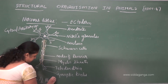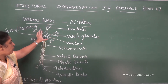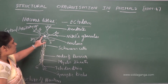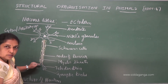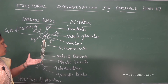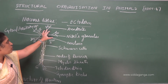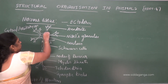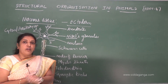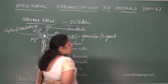The structure of a neuron consists of dendrites, cell body, and axon. Dendrites receive impulses and transfer them to the cell body; from the cell body, the impulse is transferred to the axon. The cell body contains a centrally placed nucleus surrounded by granules called Nissl's granules, which are made up of ribosomes. Nissl's granules are also called tigroid granules.